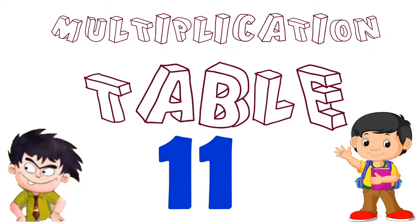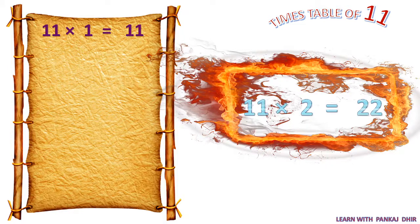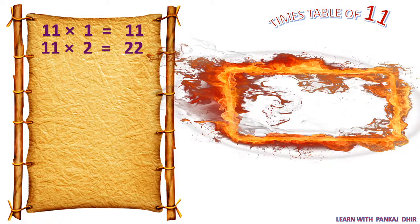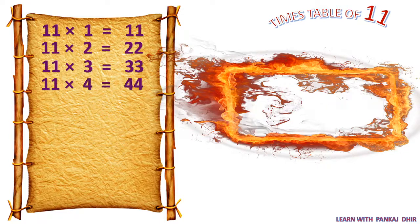Let's start the multiplication table of 11. 11 ones are 11. 11 twos are 22. 11 threes are 33. 11 fours are 44. 11 fives are 55.